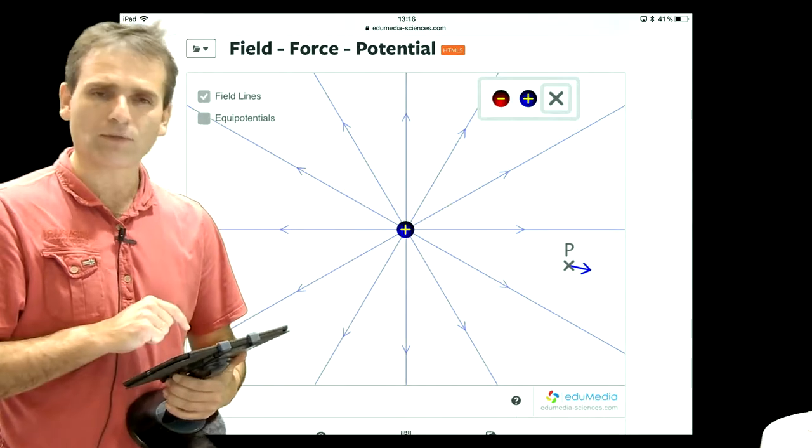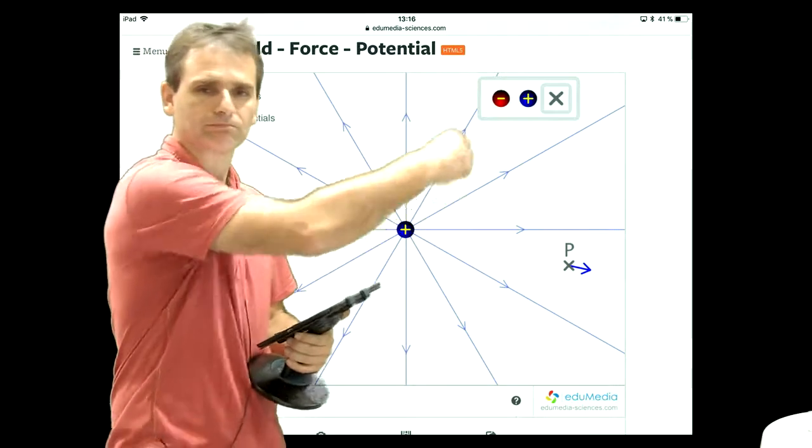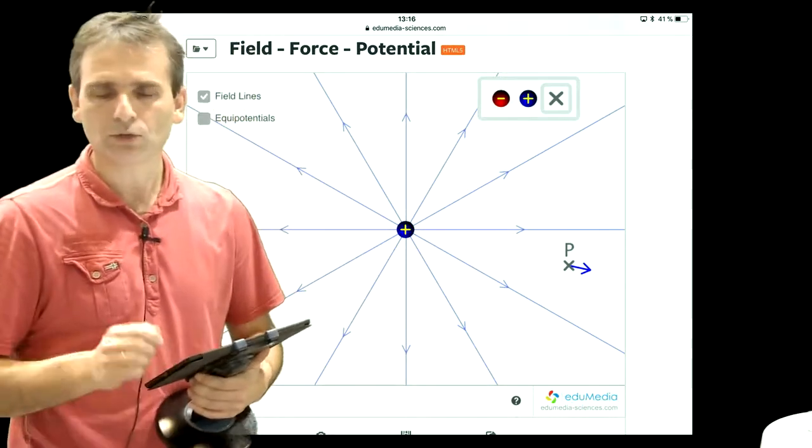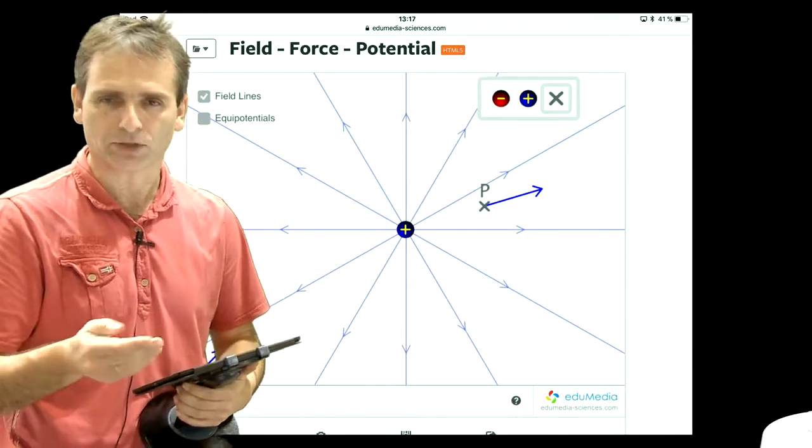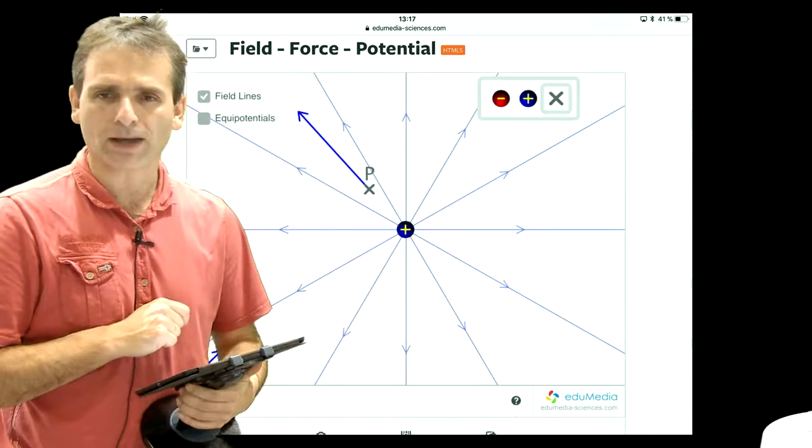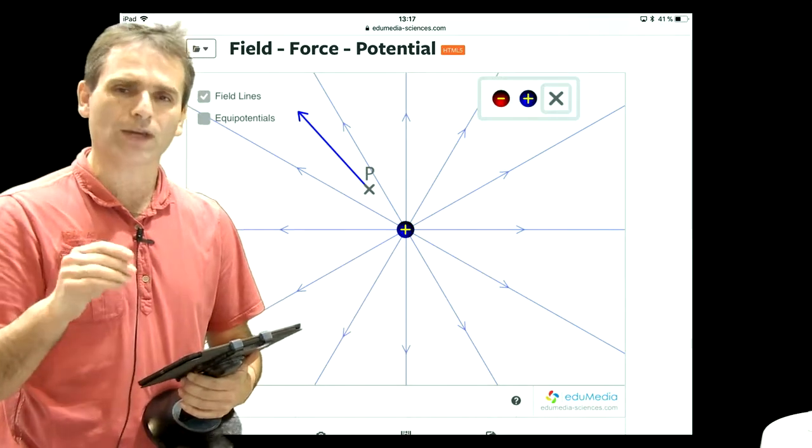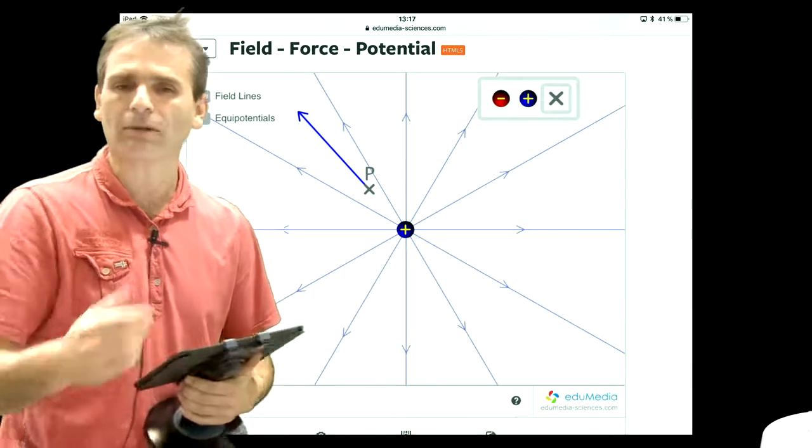I will use the field lines here to draw a kind of symmetry to understand the symmetry of the perturbation. And then I think I will stop it now and we will see in another video how the equipotentials and electric potentials can also describe these electric fields.